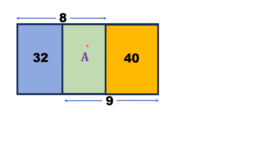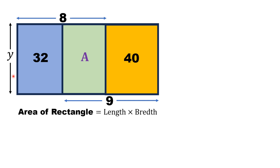Let the area of the green shaded rectangle be A, and let its breadth be y. We know that area of a rectangle is equal to length times breadth. We will solve this problem with two different methods.